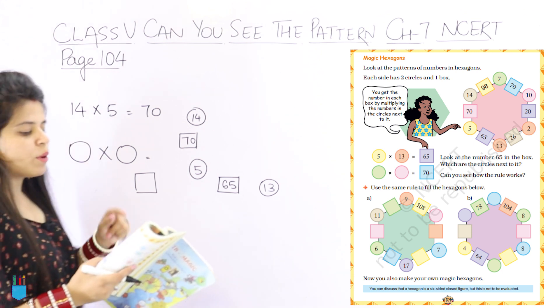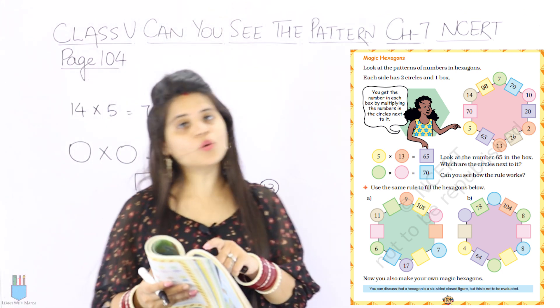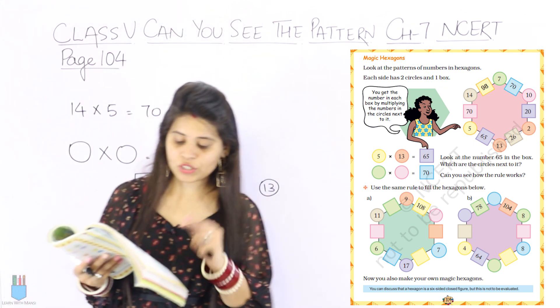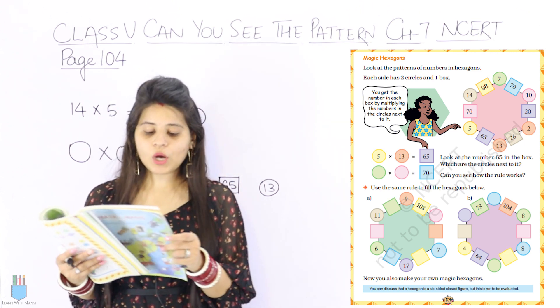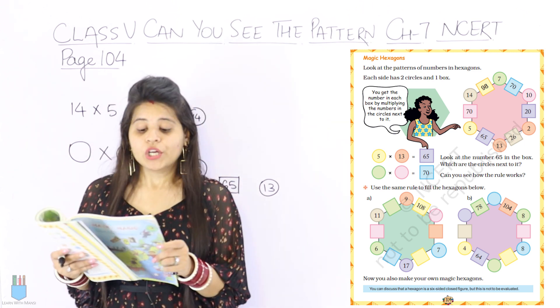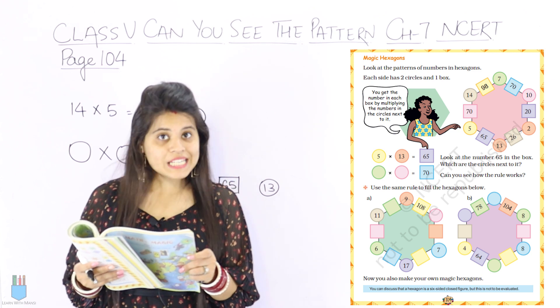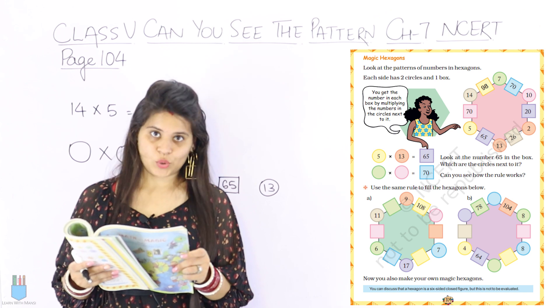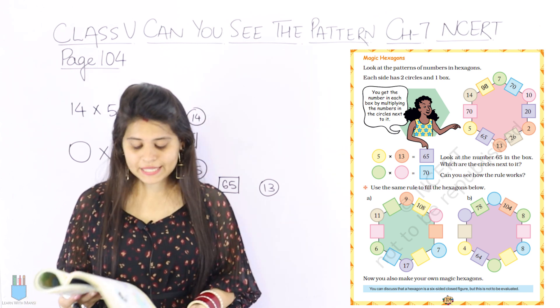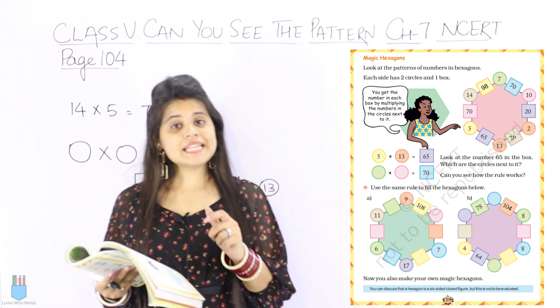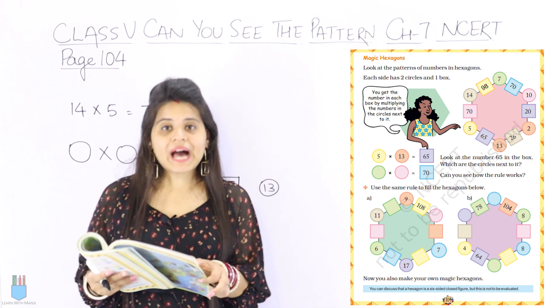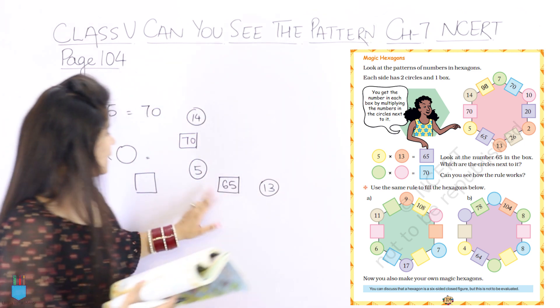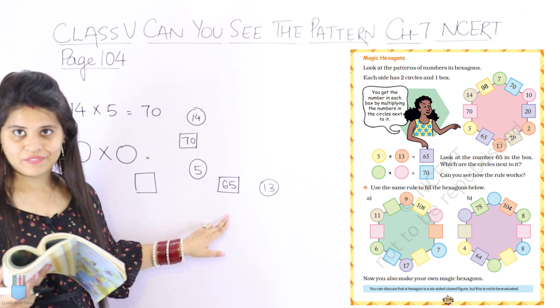If you look at the last one, it is 10 into 2, it is 20. Right? Also the girl is saying you get the number in each box by multiplying the numbers in the circle next to it, which I have explained to you. There are also examples like 5 and 13. We have also made it 5 into 13, 65. Correct?